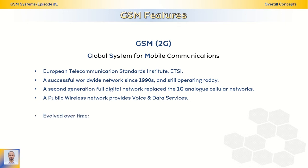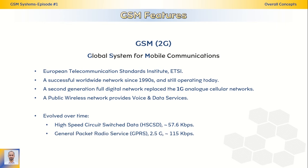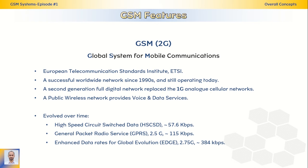GSM evolved over time and introduced new technologies, like High-Speed Circuit-Switched Data providing throughput of 57.6 kilobits per second. It also evolved into General Packet Radio Services, adapting packet switching technology — GPRS, also known as 2.5G, providing 115 kilobits per second. Then it evolved into Enhanced Data Rates for Global Evolution by modification in frequency modulation, a technology also known as 2.75G, with throughput reaching 384 kilobits per second.